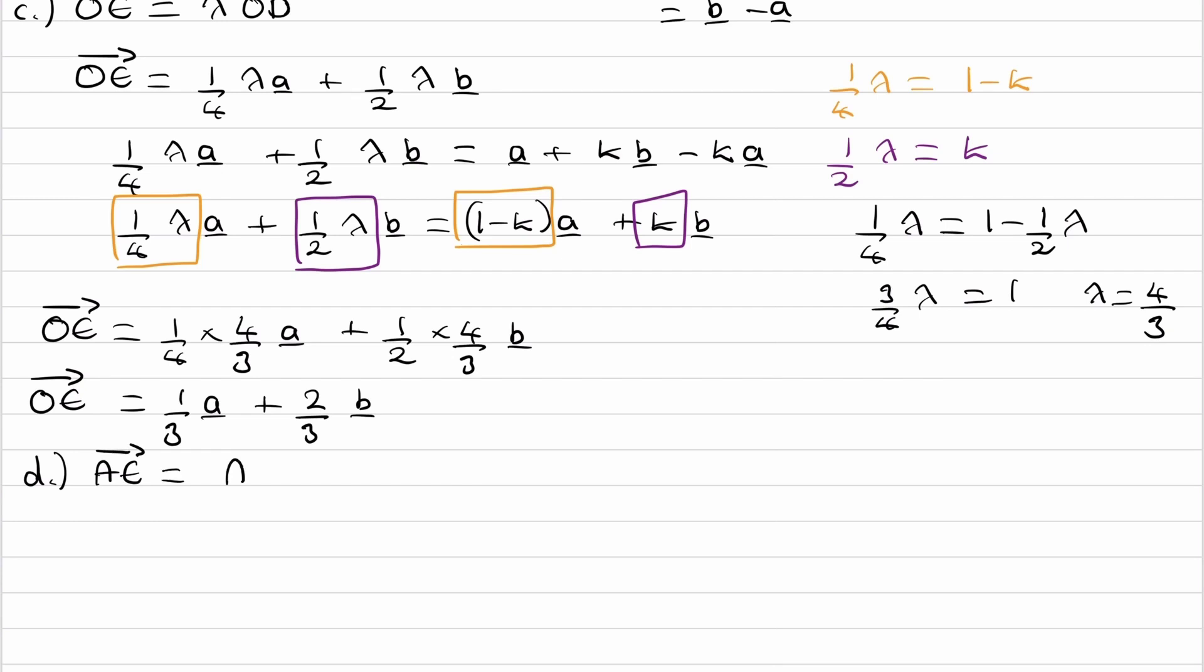Which is minus OA plus OE. I've picked those two vectors because we know what they are. Minus OA is just minus A, and then OE we worked out to be 1 third of A plus 2 thirds B. Simplify, AE is then minus 2 thirds A plus 2 thirds B.